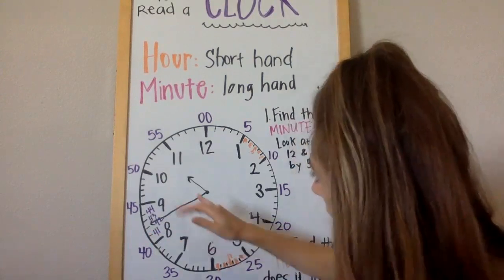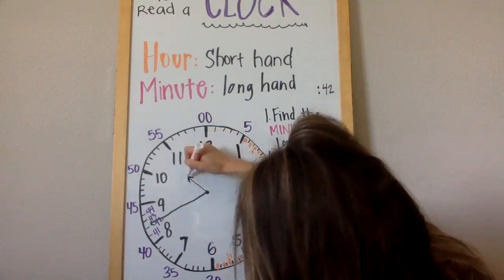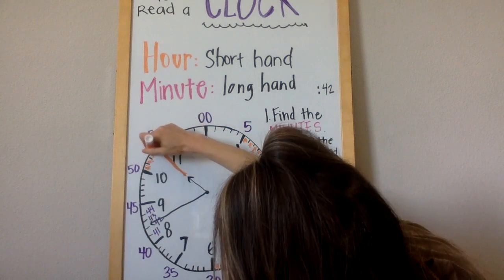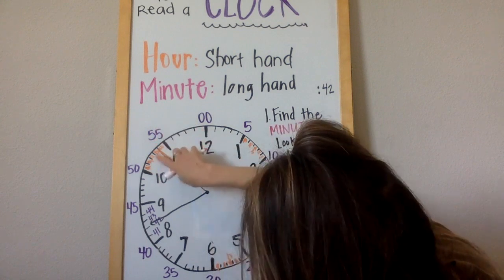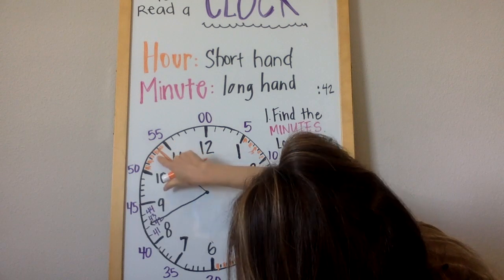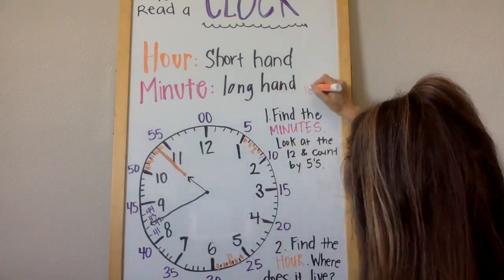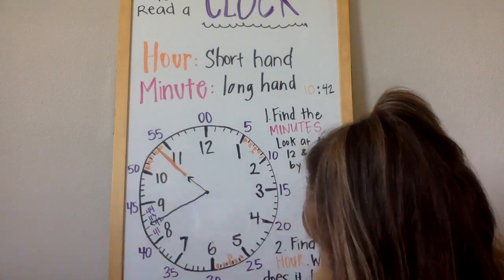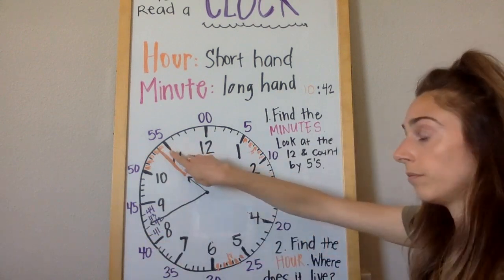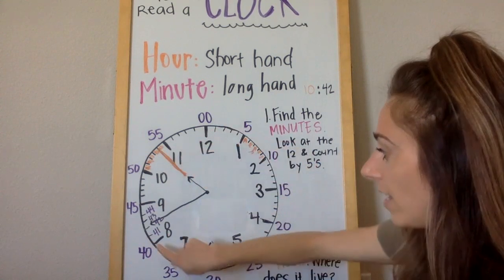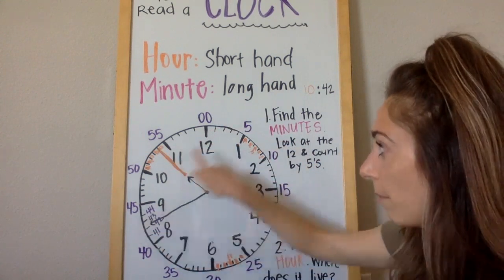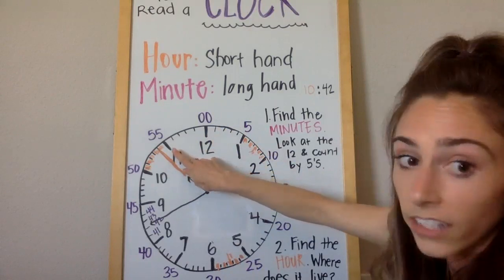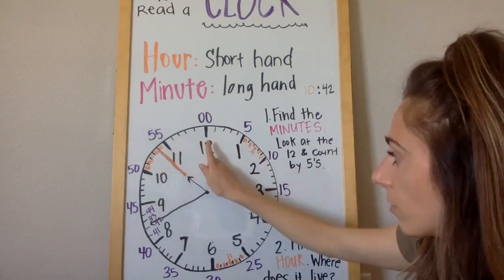Now let's look at the hour. My hour is not quite on 11 yet — it's almost there. My hour hand lives in the backyard of the 10, so it is in the hour of 10. So it is 10:42. Notice my hour hand is really, really close to the 11 because my minute hand has made it 42 minutes past the hour of 10. So our hour hand is slowly getting closer and closer to the 11 — there's not much time left until we get to our new hour of 11 o'clock.